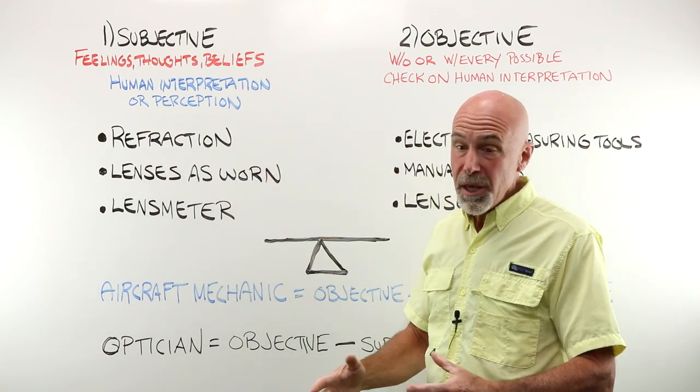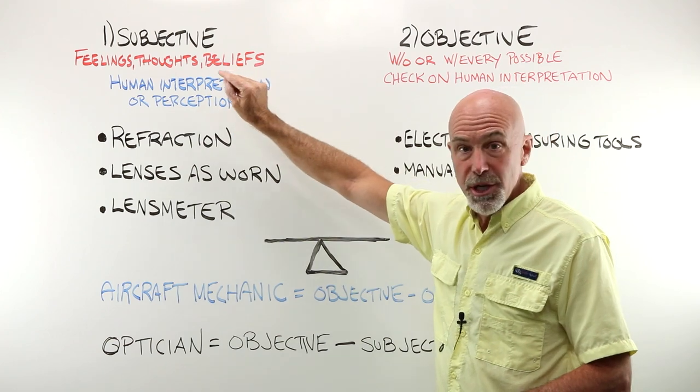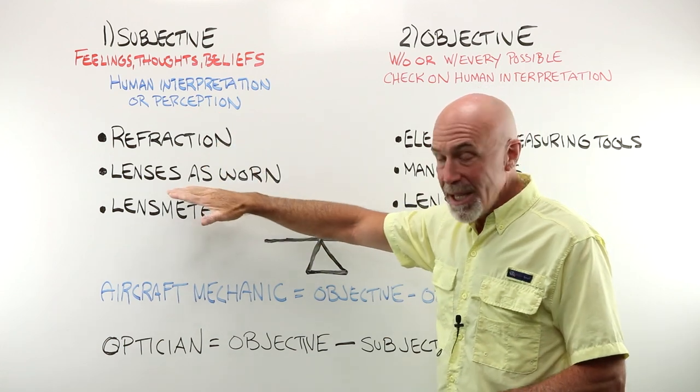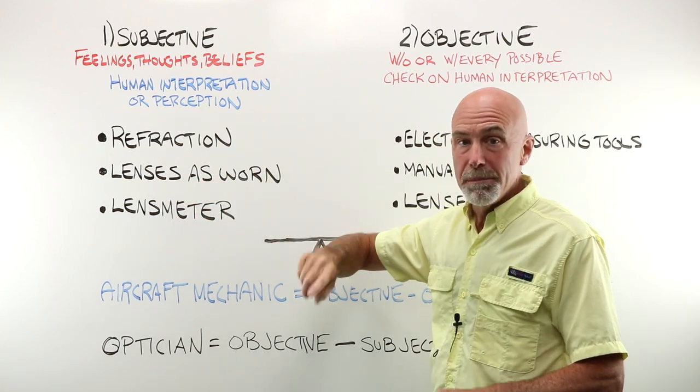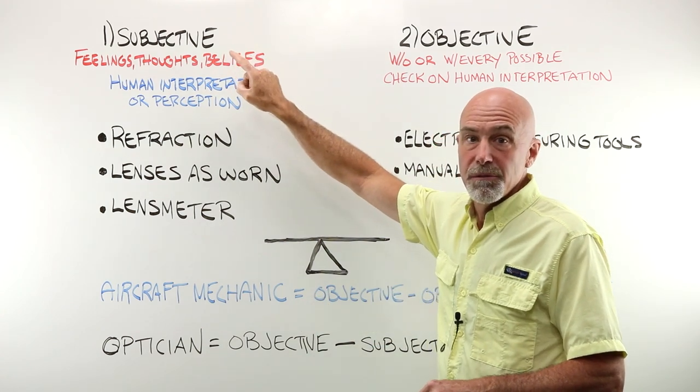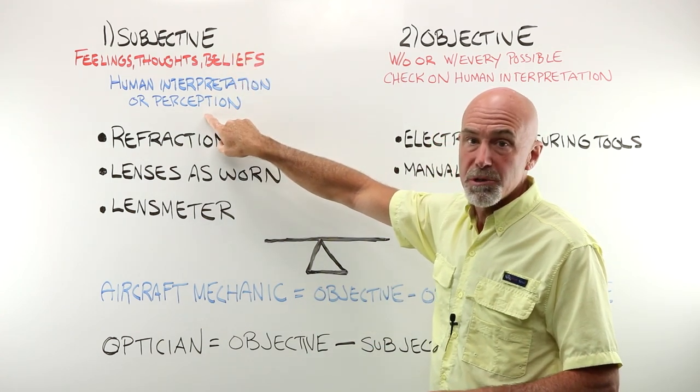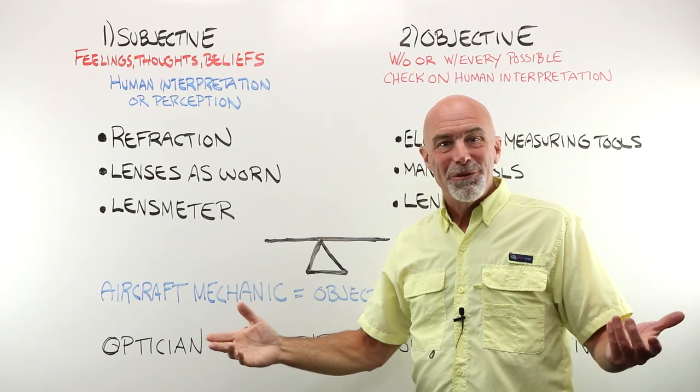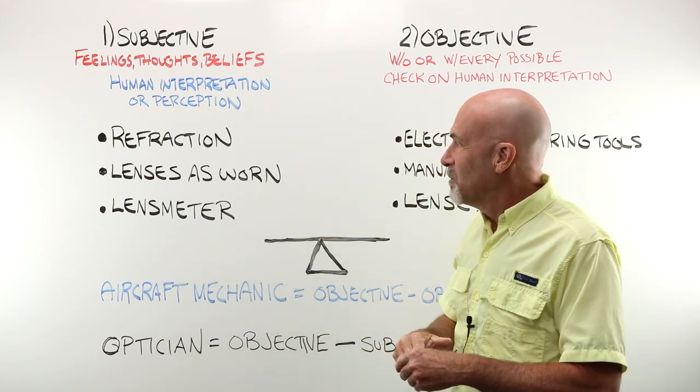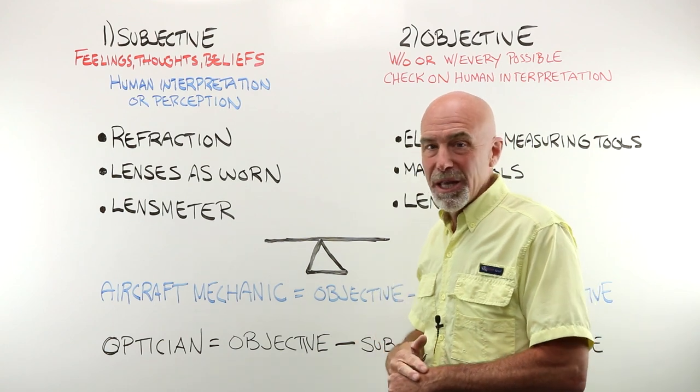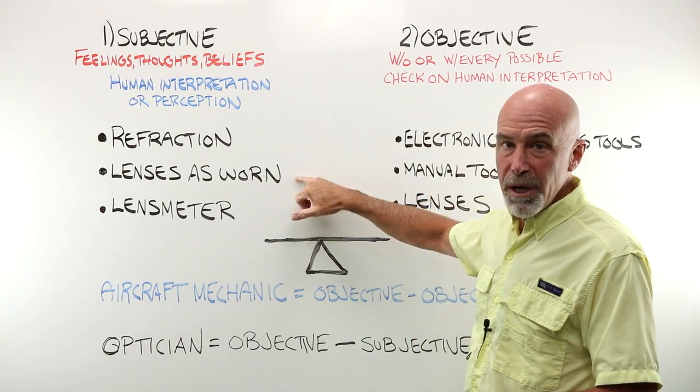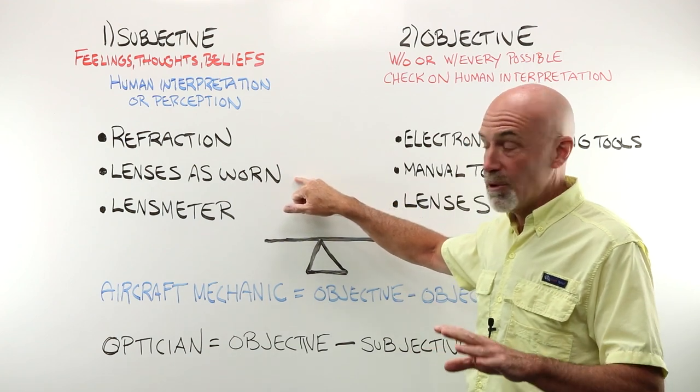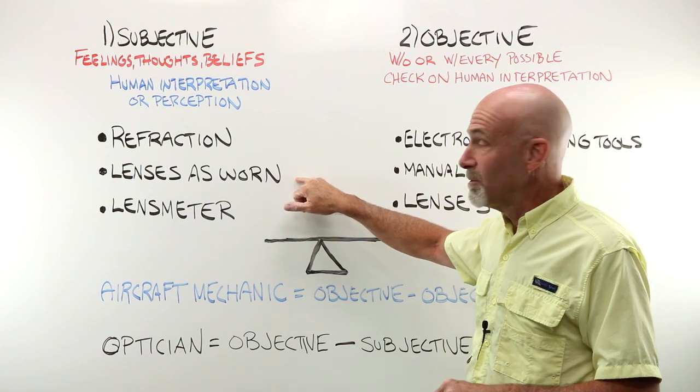Refraction, which is better, one or two, is a subjective measure. Really, really important. Lenses, as worn by a human being, are subjective. They are open to human perception. Remember, focal length change, vertex. We've all heard the story of the crazy lady who swears she's completely blind without her minus .50 OU glasses. Lenses, as worn by a human, are subjective. Super important thing to keep in mind before you go applying standards as some kind of law.